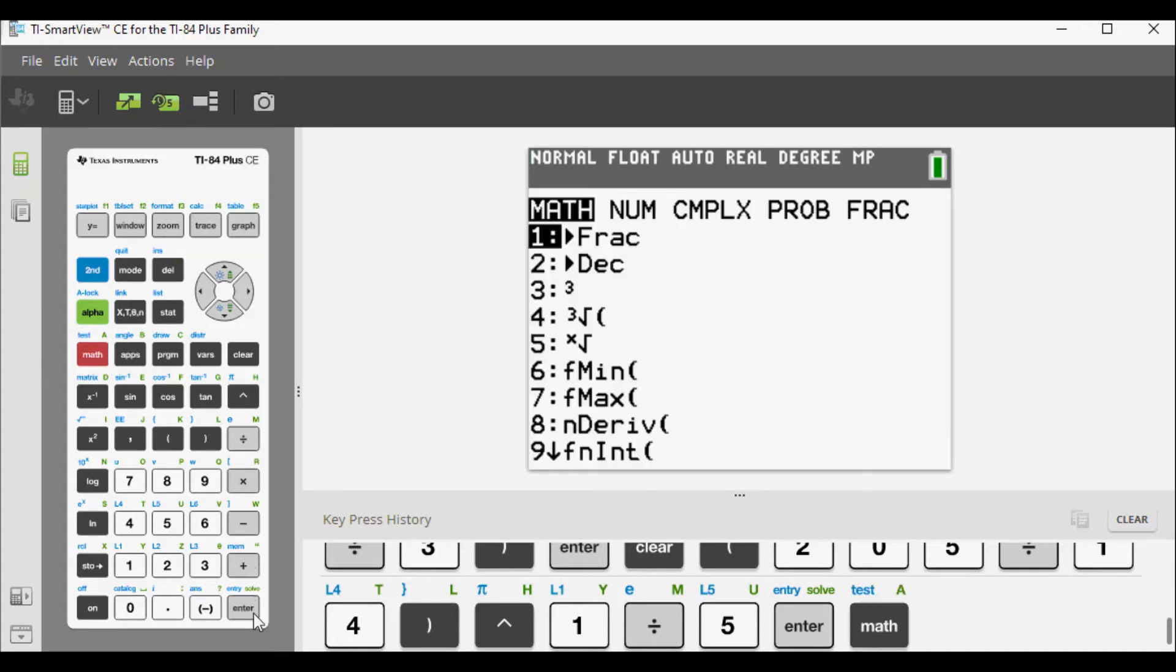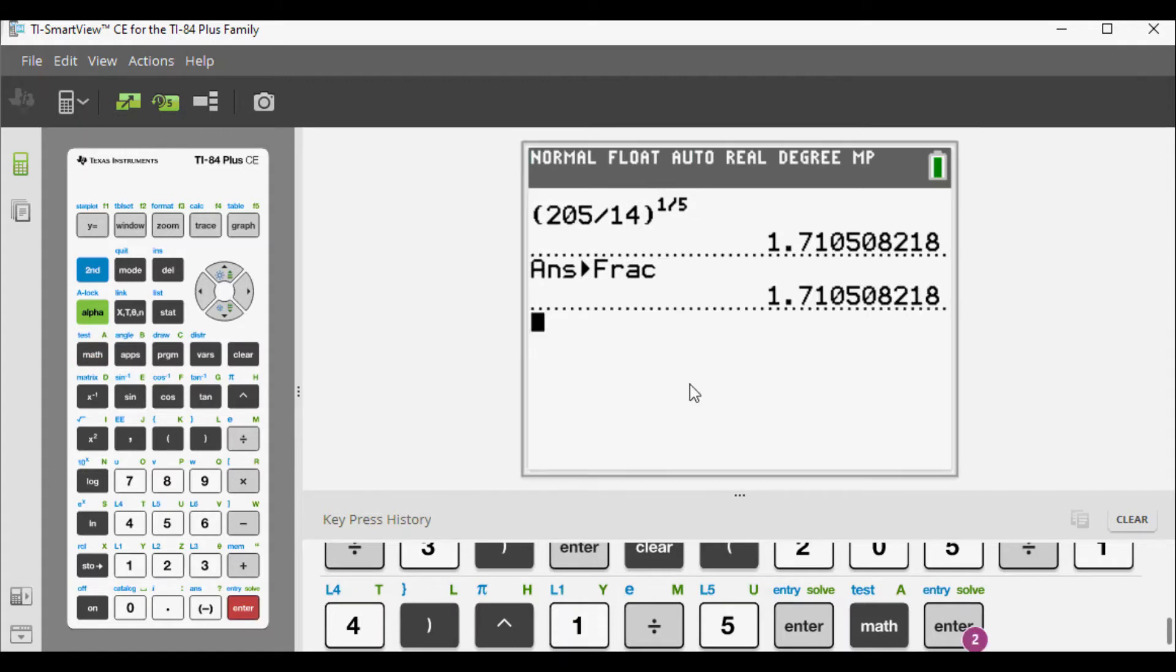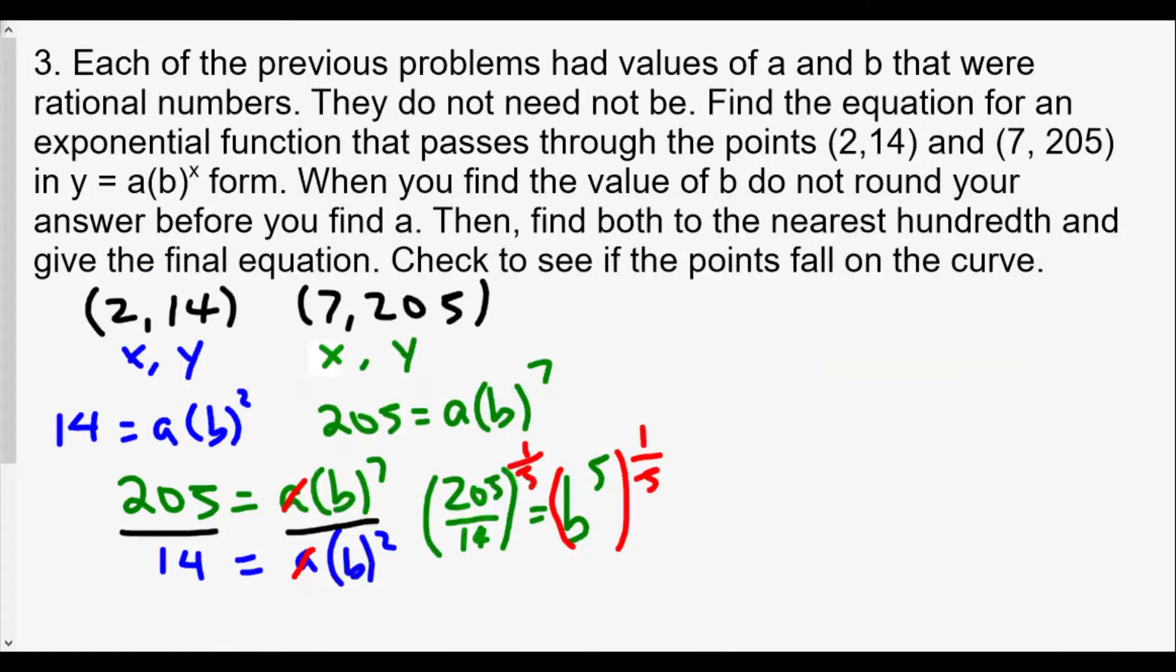We try to use our math button and change to a fraction. We will find that we get the same result. The calculator is unable to rewrite this as a fraction. We're not going to round this off here. B is equal to 205 over 14 to the one-fifth power, which is the same as the decimal we found.